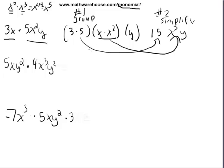So we're going to follow the same steps we did here. We're going to group and simplify. Let's group the coefficients, the numbers like we did up above. We've got 5 times 4. Let's group the x's, x and x cubed. And group the y's. We've got y squared times y cubed.